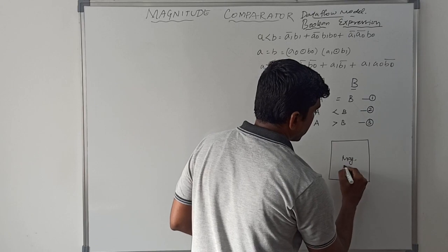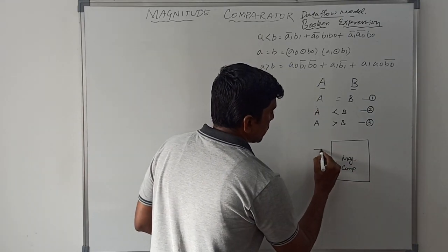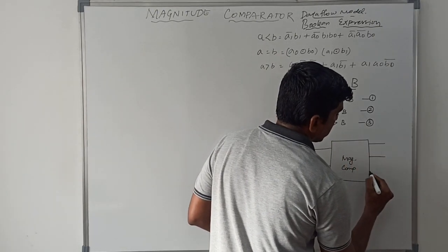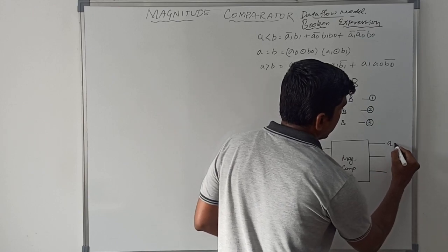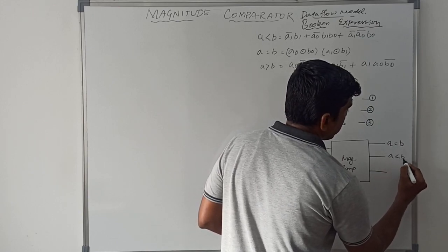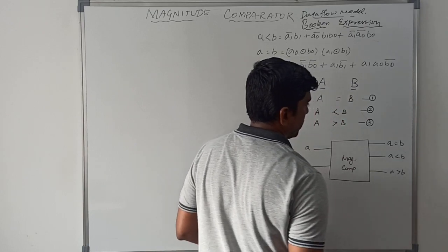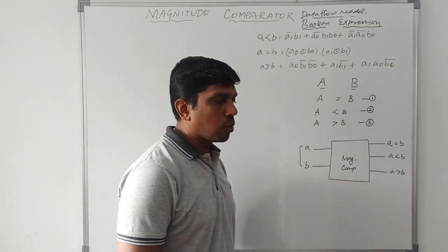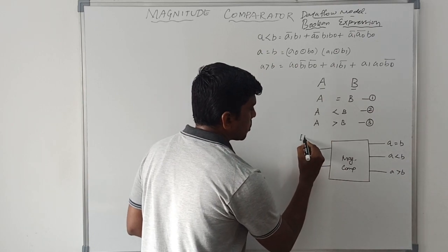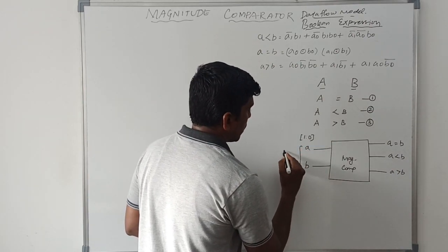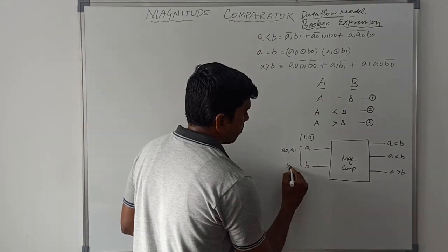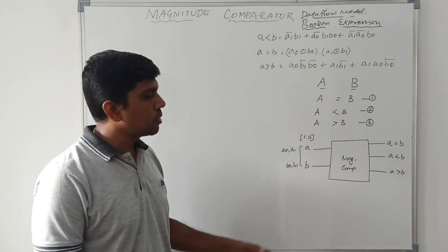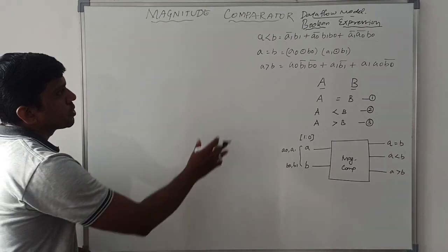Now I draw the block diagram for the magnitude comparator. The inputs are A and B, and it produces three possible outputs: A equal to B, A less than B, and A greater than B. The input variables are 2-bit values: A0, A1, B0, and B1. The corresponding truth table and simplification were discussed in the previous video.